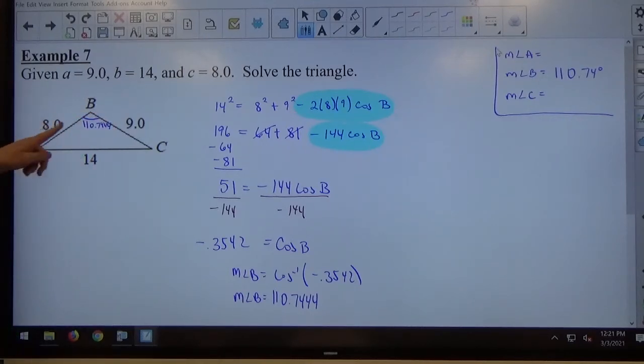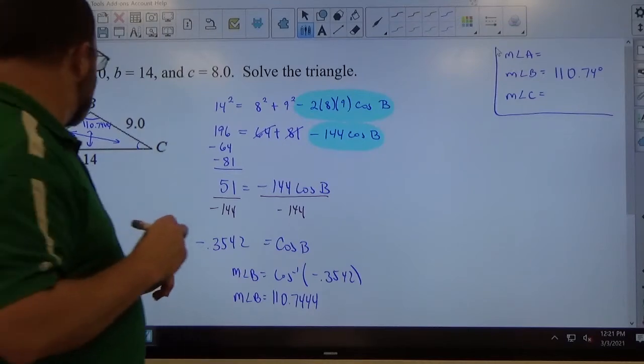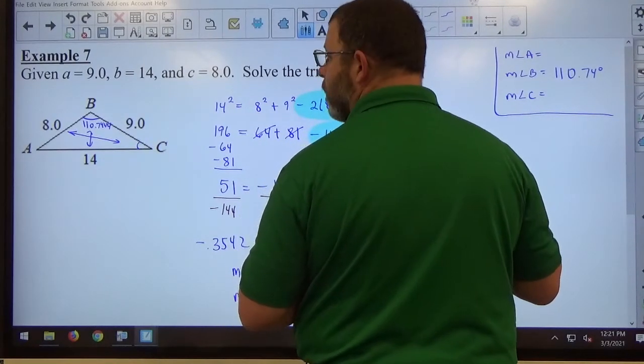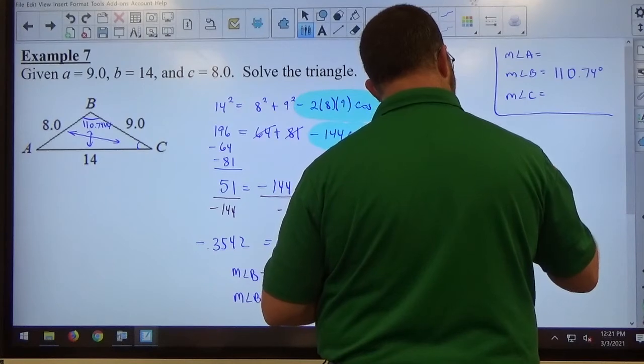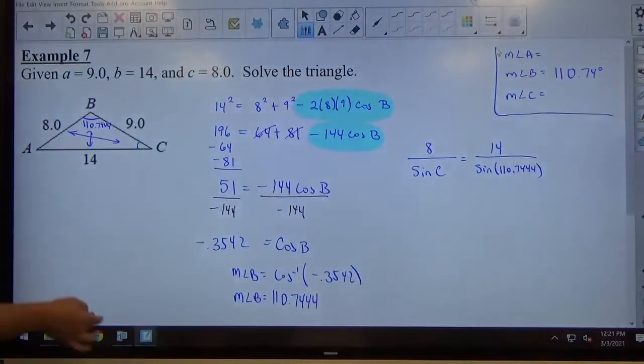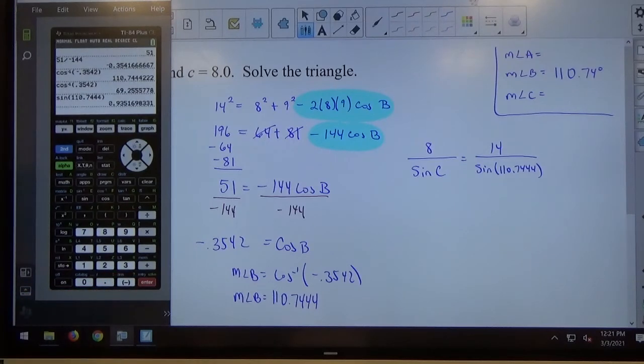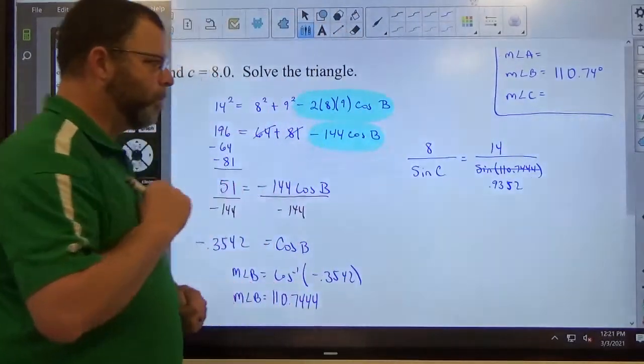Once I know that angle B is 110.7444, now I'm going to revert to the law of sines to find either A or C. They're both acute angles, so it doesn't matter which one I find. I usually go for the smallest one. So if it's me, I'm going to find C first. So if I'm looking at C, C is opposite 8, and B is opposite 14. So I'm going to have 8/sin C = 14/sin 110.7444. Get my calculator out, and I type in sine 110.7444, and that is 0.9352.